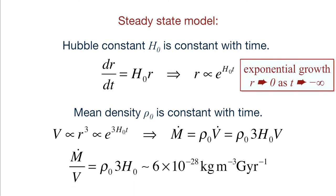In the steady-state model with exponential growth, the distance between two galaxies approaches zero only asymptotically as T goes to minus infinity, so there is no instance when the universe began expanding. Since the creation rate of about 6 times 10 to the minus 28 kilograms per cubic meter per giga year is far too low to observe by staring at a cubic meter of space hoping to see a hydrogen atom pop out of nowhere, you couldn't observationally verify the steady-state model that way.